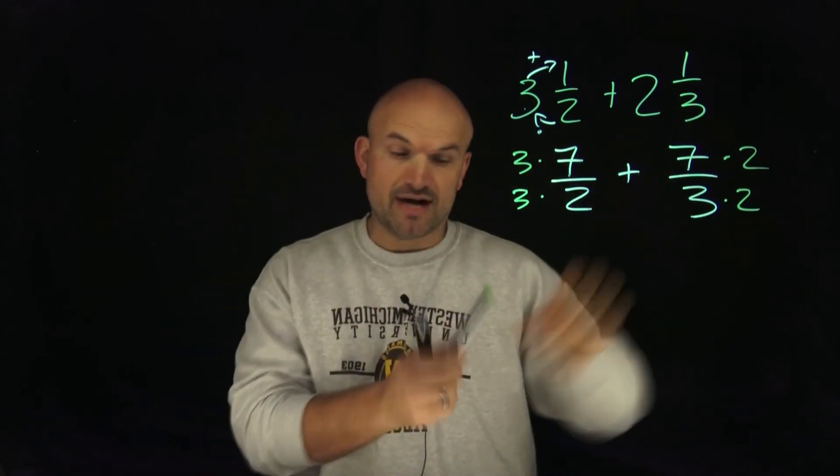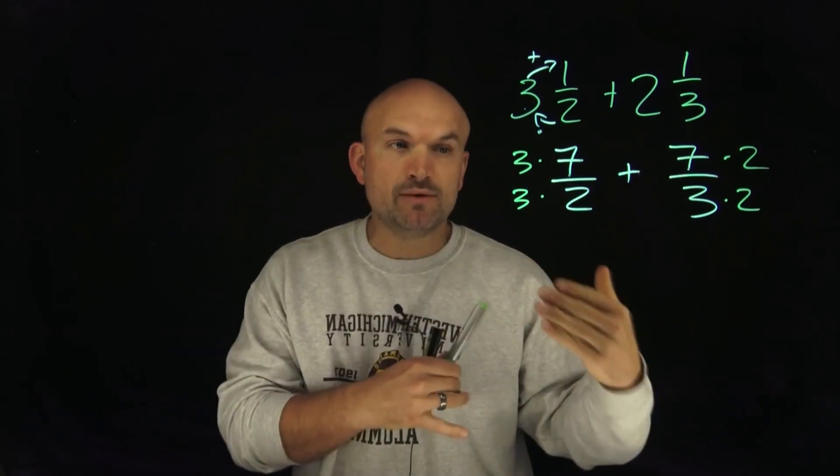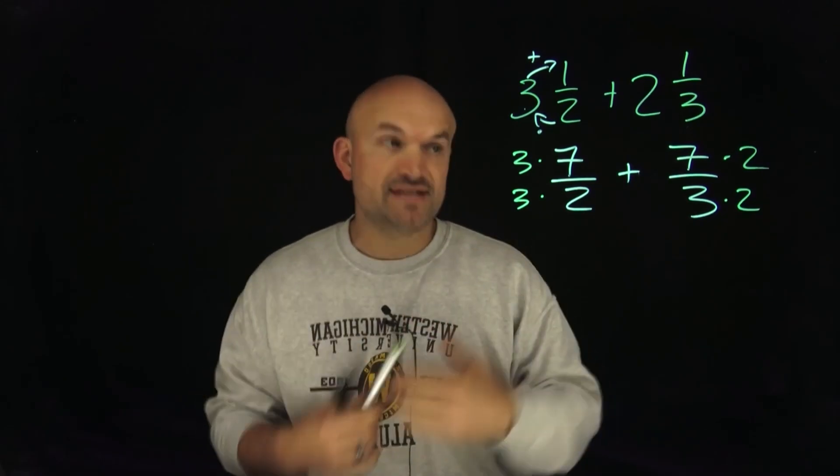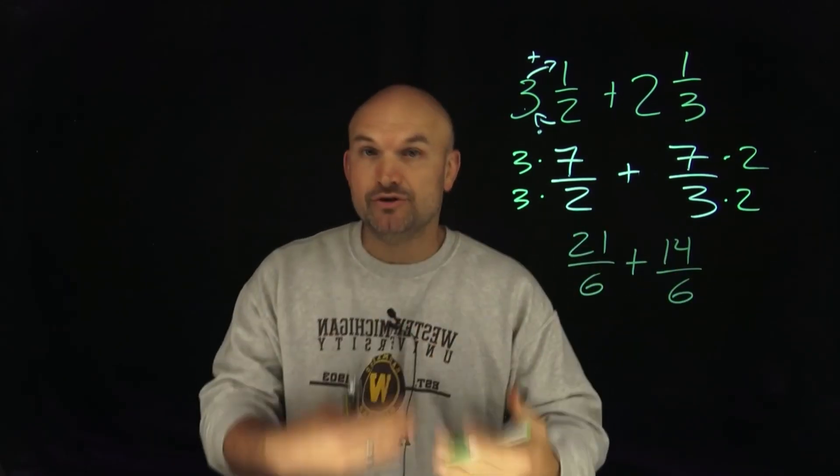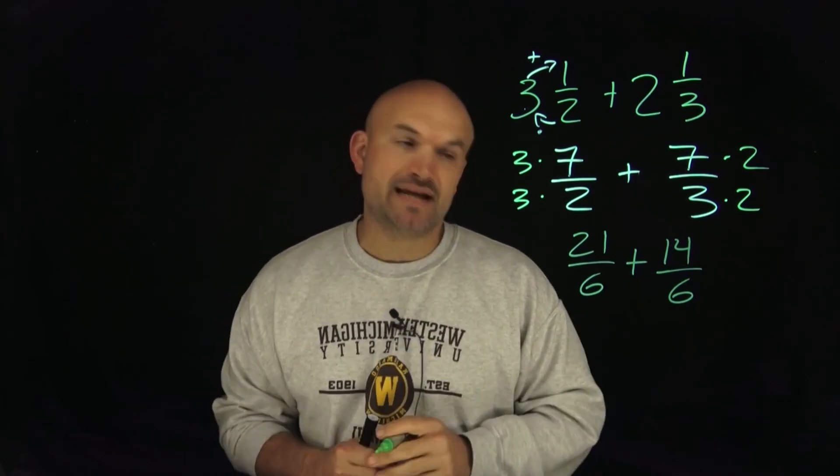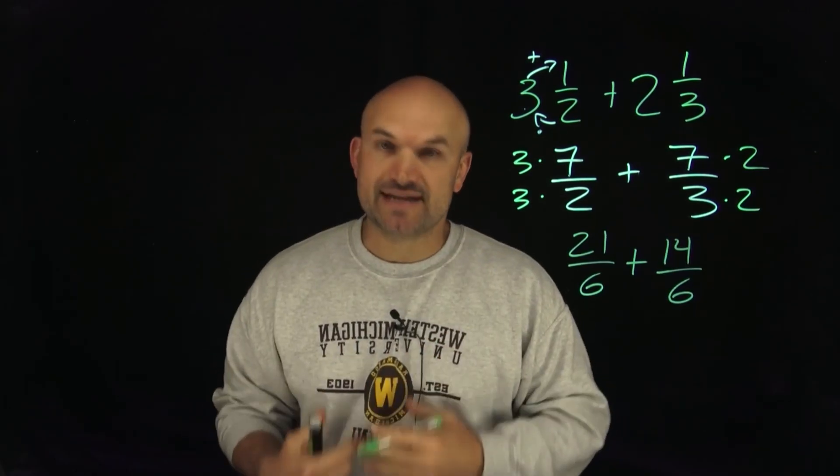When you multiply straight across, I'm now going to obtain 21 over 6 plus 14 over 6. Now I can simply go ahead and add my numerators and keep the denominator the same to get 35 over 6.